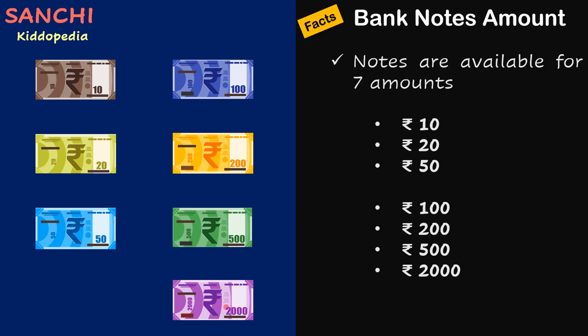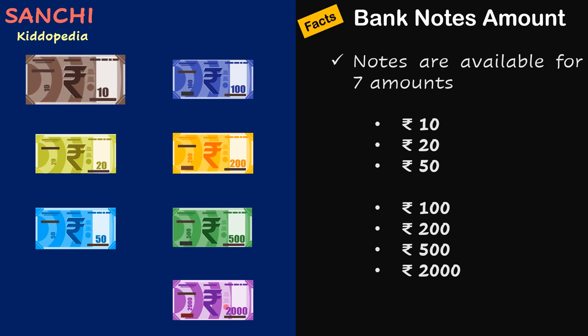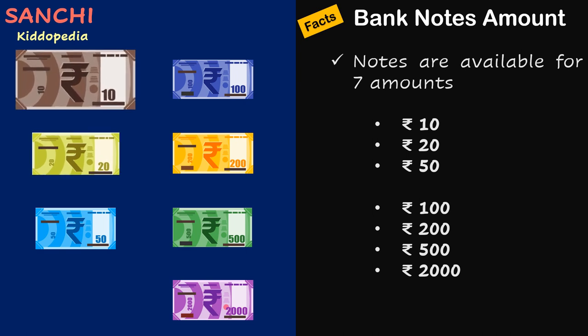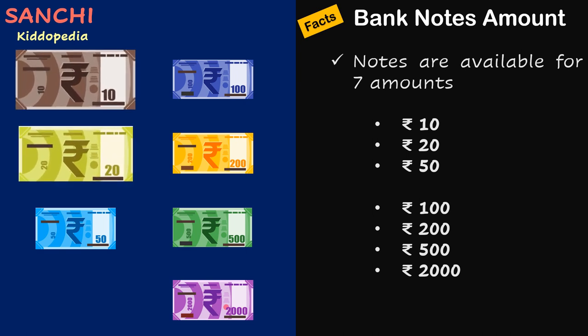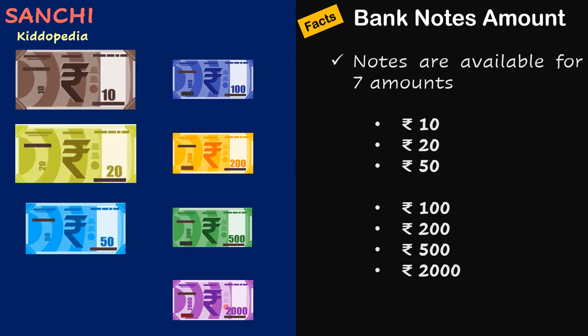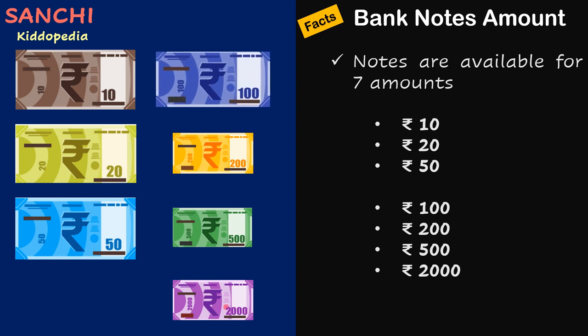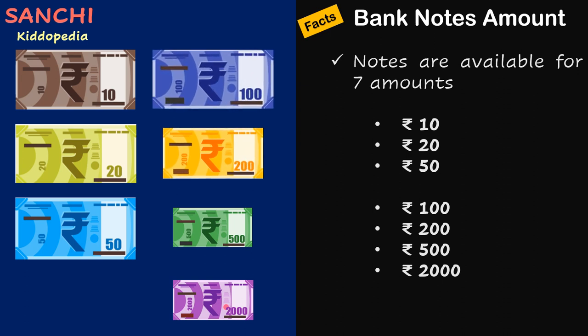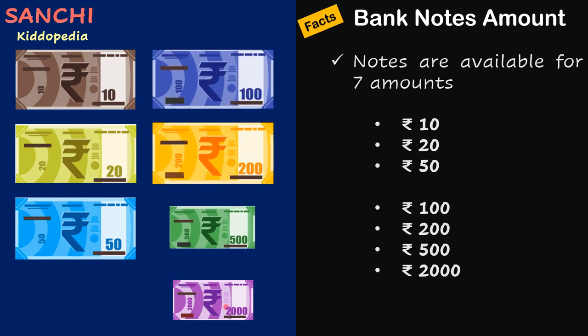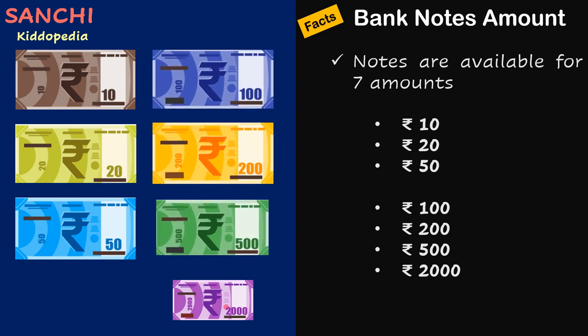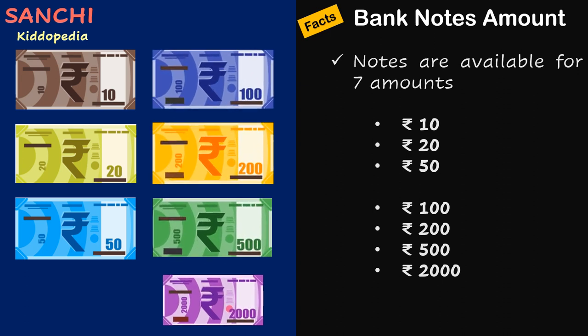Facts about bank note amounts: Notes are available in 7 denominations — Rupees 10, 20, 50, 100, 200, 500, and 2000.